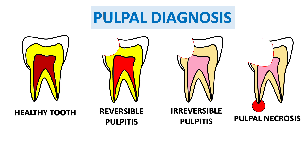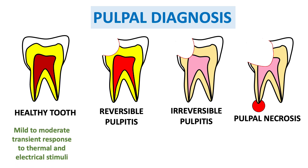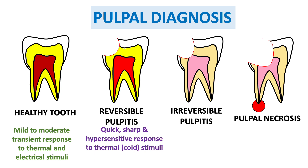How do you diagnose whether it is reversible pulpitis, irreversible pulpitis, or pulpal necrosis? With pulp testing on a healthy tooth, you may see a mild to moderate transient response to thermal and electrical stimuli. In reversible pulpitis, there is a sharp pain especially to cold stimuli.